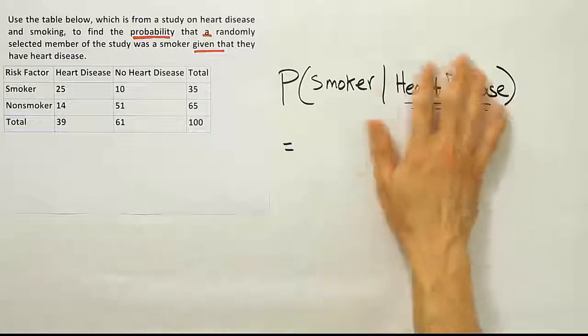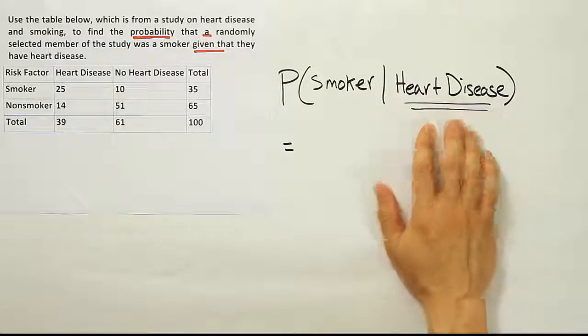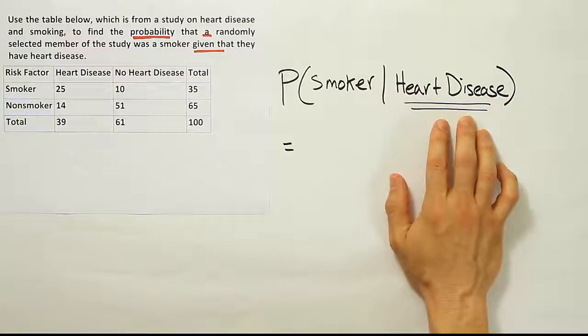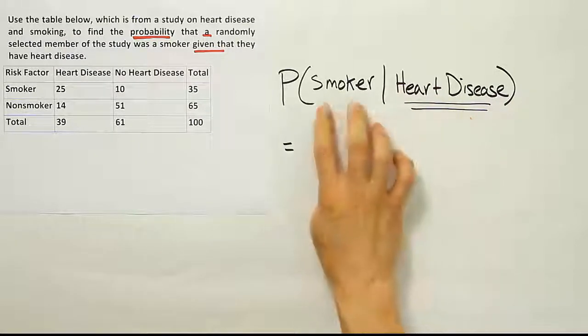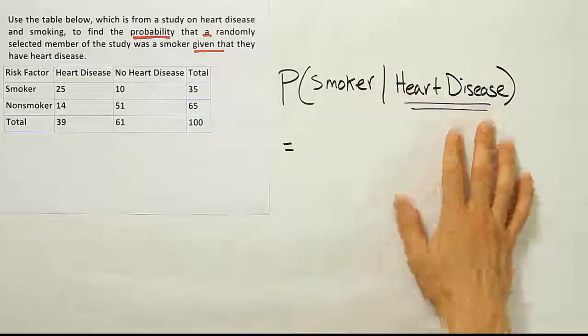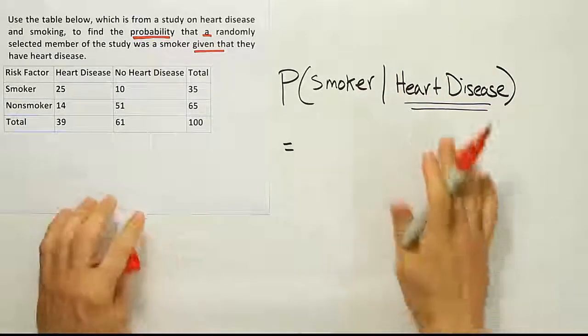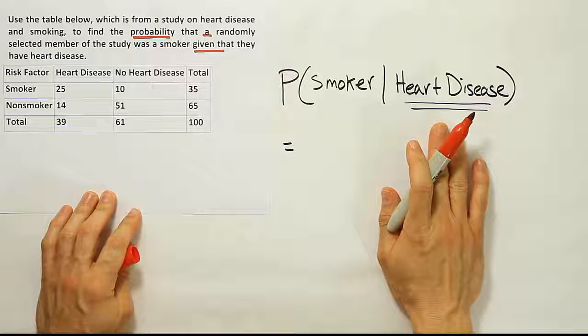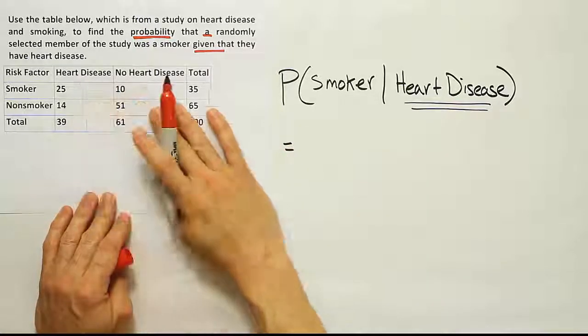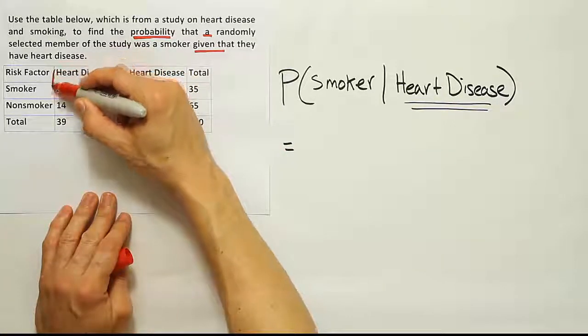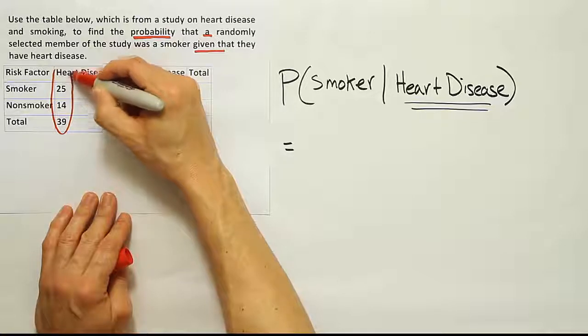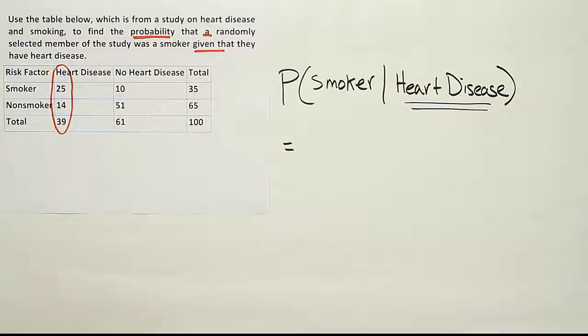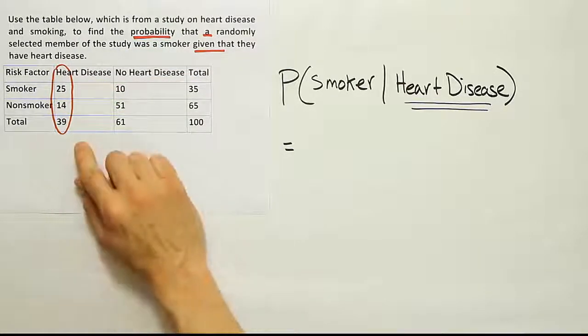So we should focus all our attention on this only. Only look at the group who has heart disease and then ask your question: probability of a smoker out of that group. We're going to focus all our attention on the heart disease either column or row. When I look at the problem here I can see the data for heart disease is all located here. Heart disease is that first column of data.